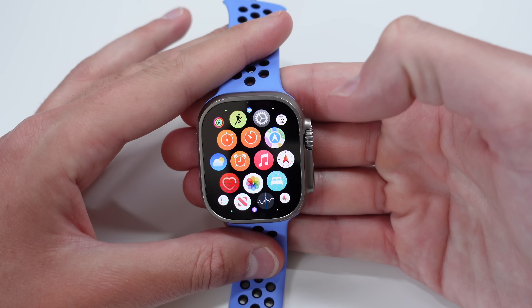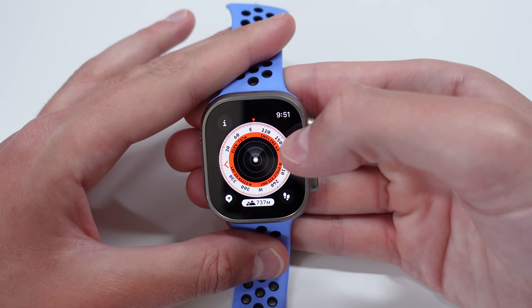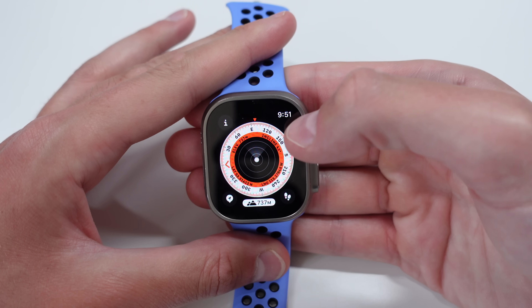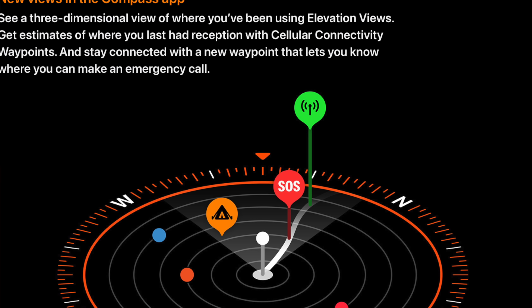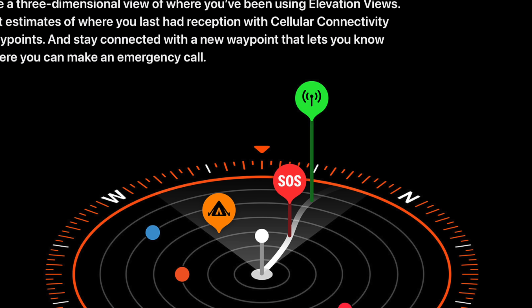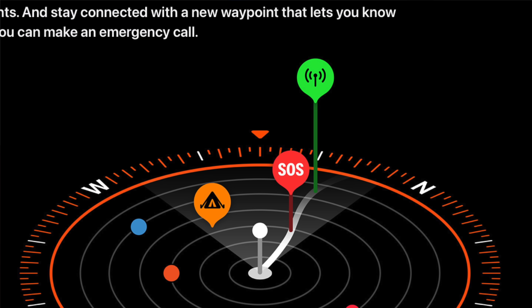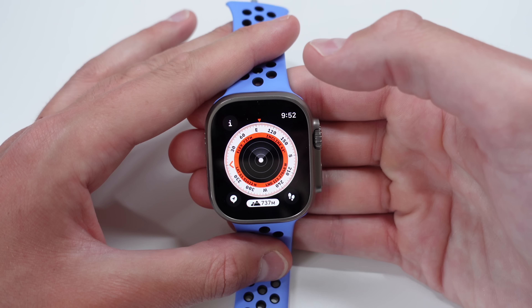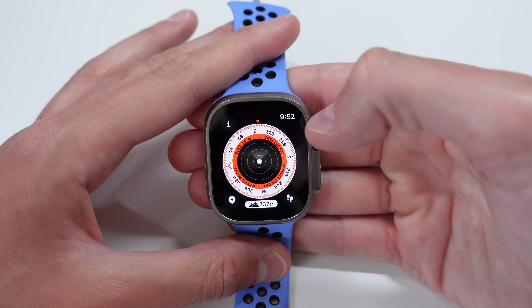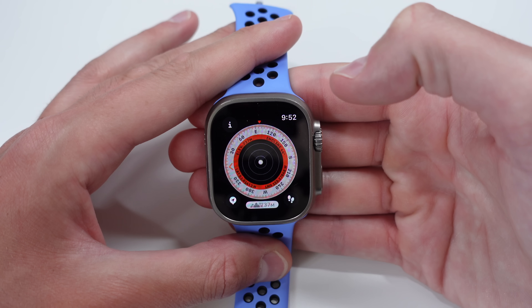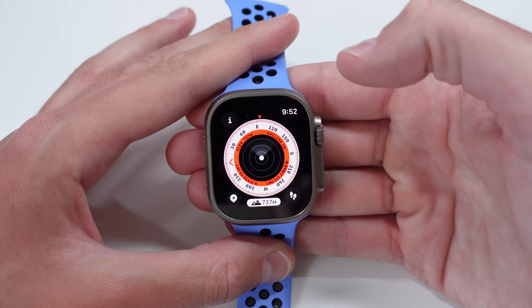The Compass app has a great update in watchOS 10. If you're out exploring in the wilderness, the compass now shows you the last place you had cellular connection and the last place you had service to call 911. These two pinpoints are important: one shows your last connection to your carrier, and the other shows the last time you had connection to any carrier — which is what lets you contact 911 in an emergency.